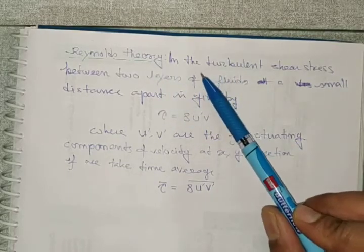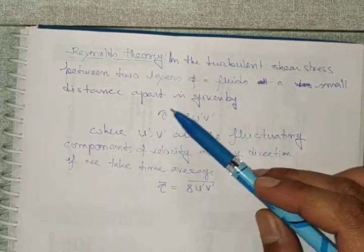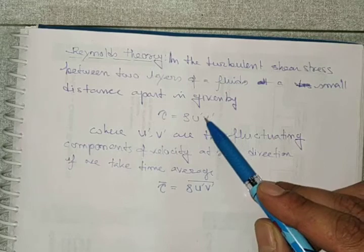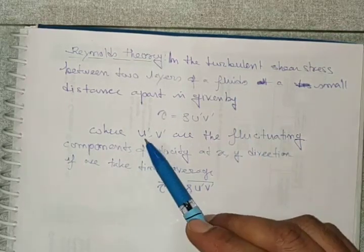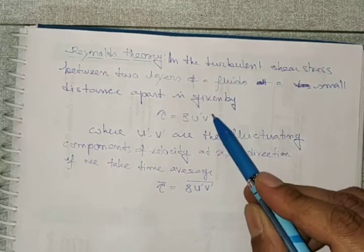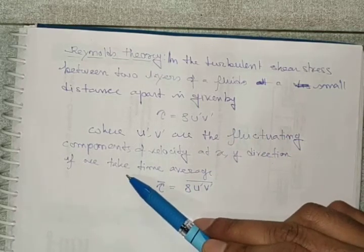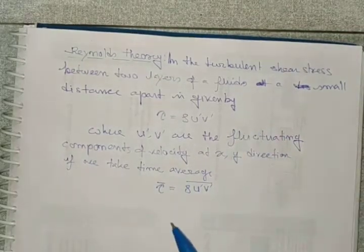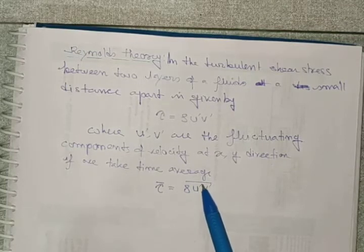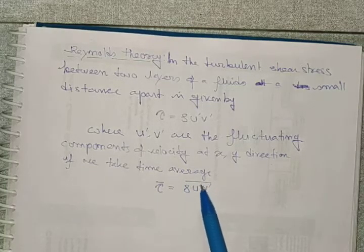In turbulent flow, the shear stress between two layers of fluid at a small distance apart is given by τ = ρu'v', where u' and v' are the fluctuating components of velocity in the x and y directions, representing fluctuating velocity due to turbulence. Taking the time average, τ̄ = ρ·v'u'̄.